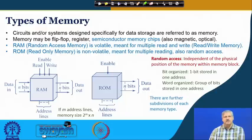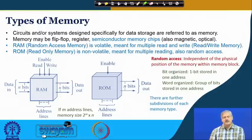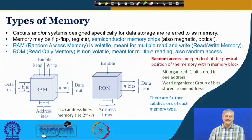Within RAM and ROM there are further subdivisions. In RAM, there is static RAM which does not require refreshing, and dynamic RAM which requires periodic refreshing — each has its strengths and weaknesses. Similarly in ROM, we have PROM, EPROM, and other varieties, which we shall take up in subsequent classes. These are the two major varieties.